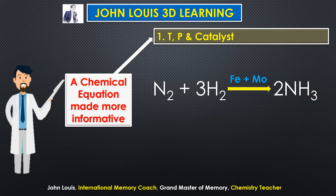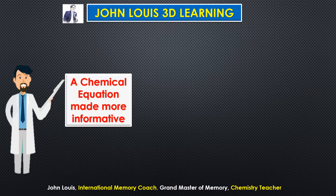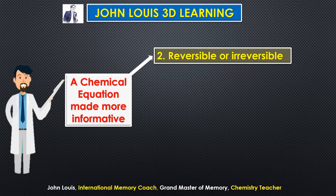The catalysts are iron and molybdenum, the temperature is 450 degrees Celsius, and the pressure is 200 to 900 atmospheric pressure. All these conditions can be mentioned either above or below the arrow mark. This is the first additional information we can provide for a chemical equation.